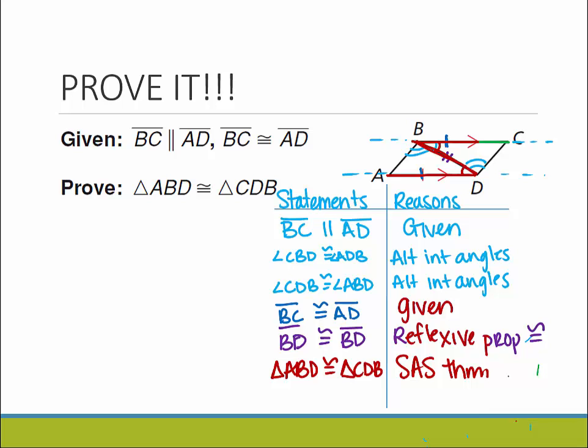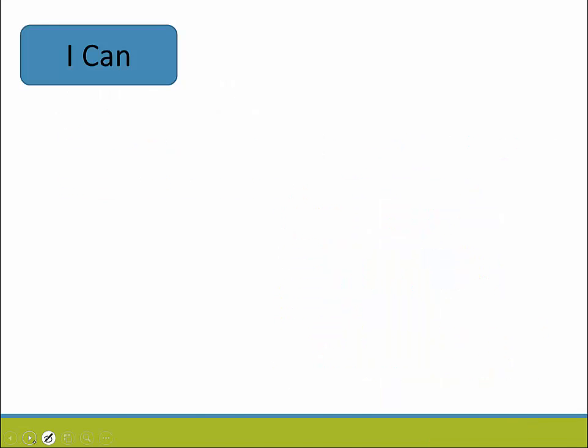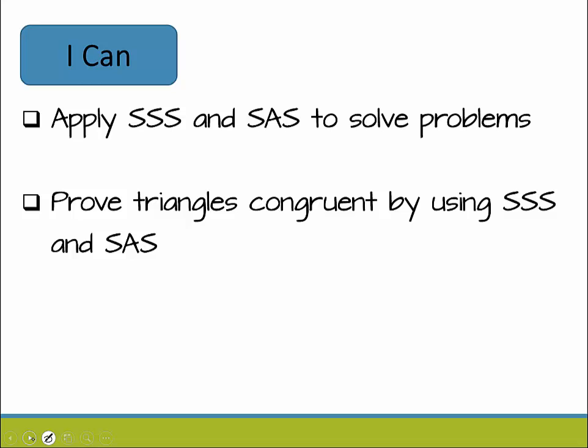It's a lot easier than proving that everybody's equal. You should be able to apply the side-side-side and side-angle-side theorems to solve problems, and then you should be able to prove triangles are congruent by using side-side-side and side-angle-side.